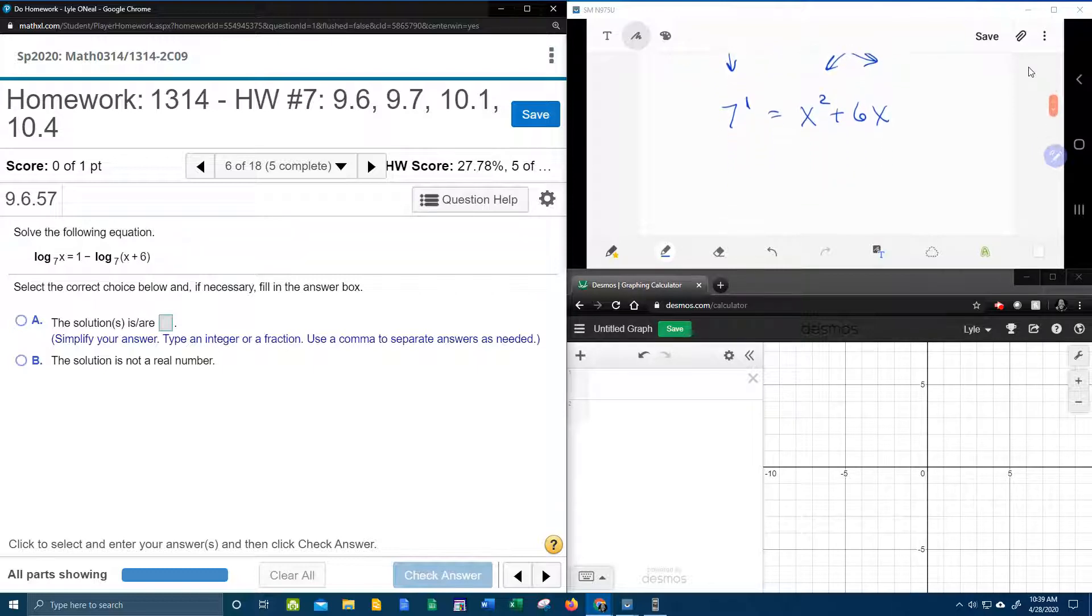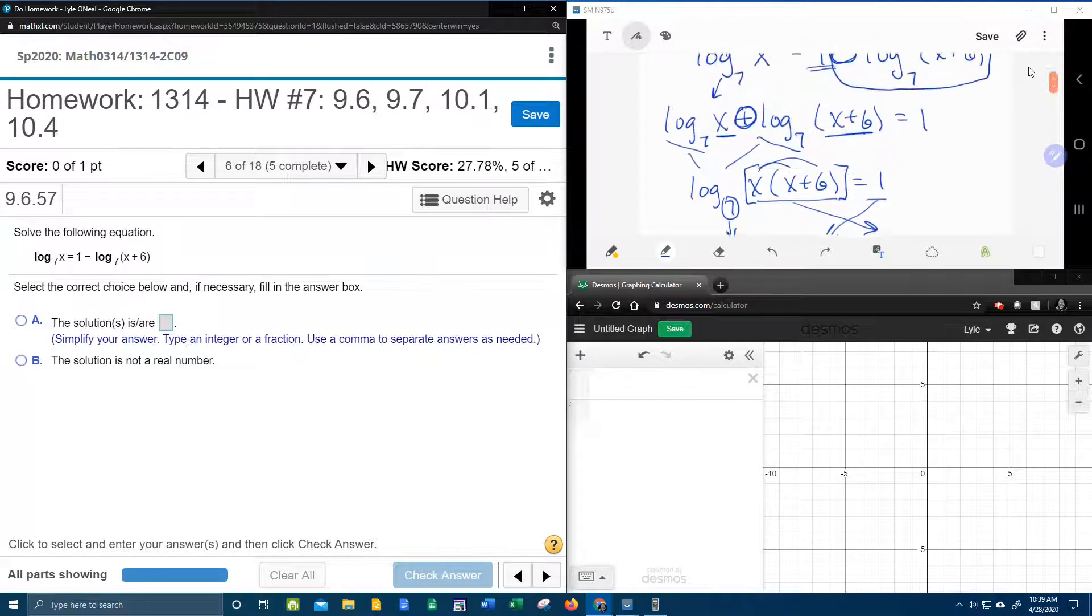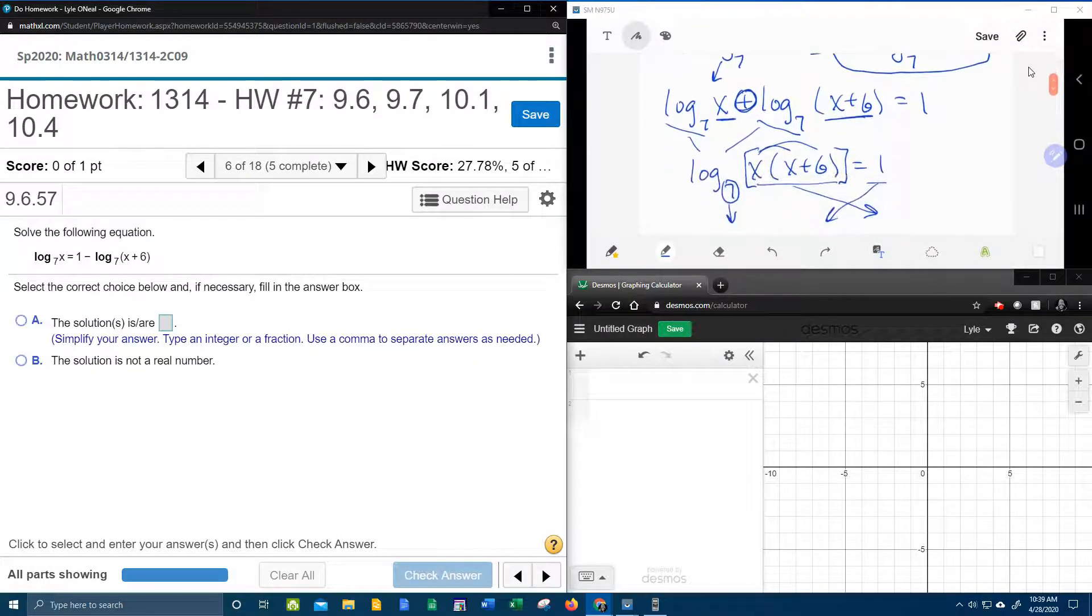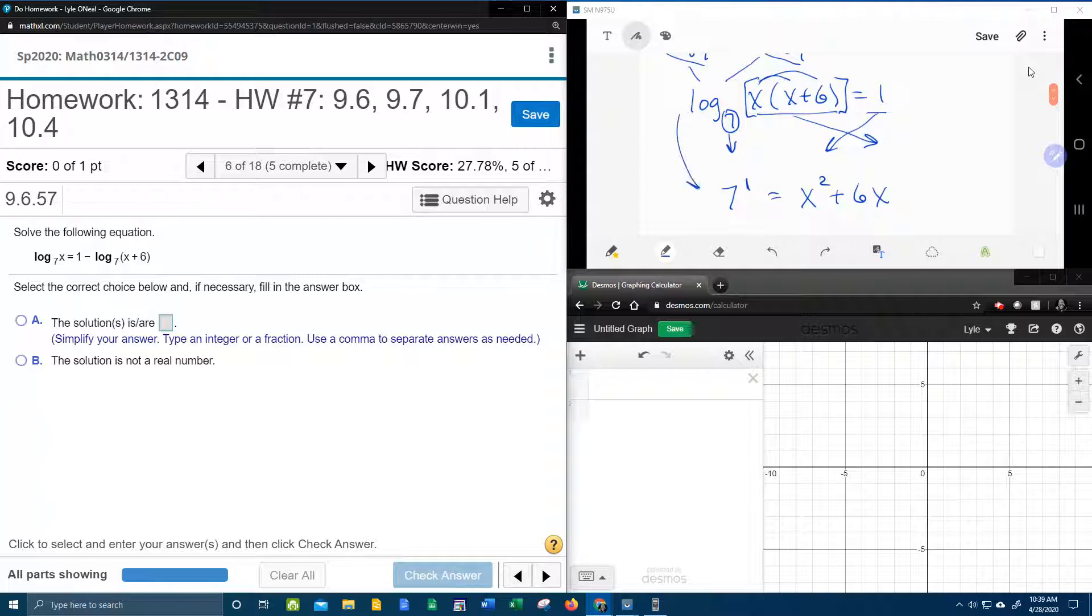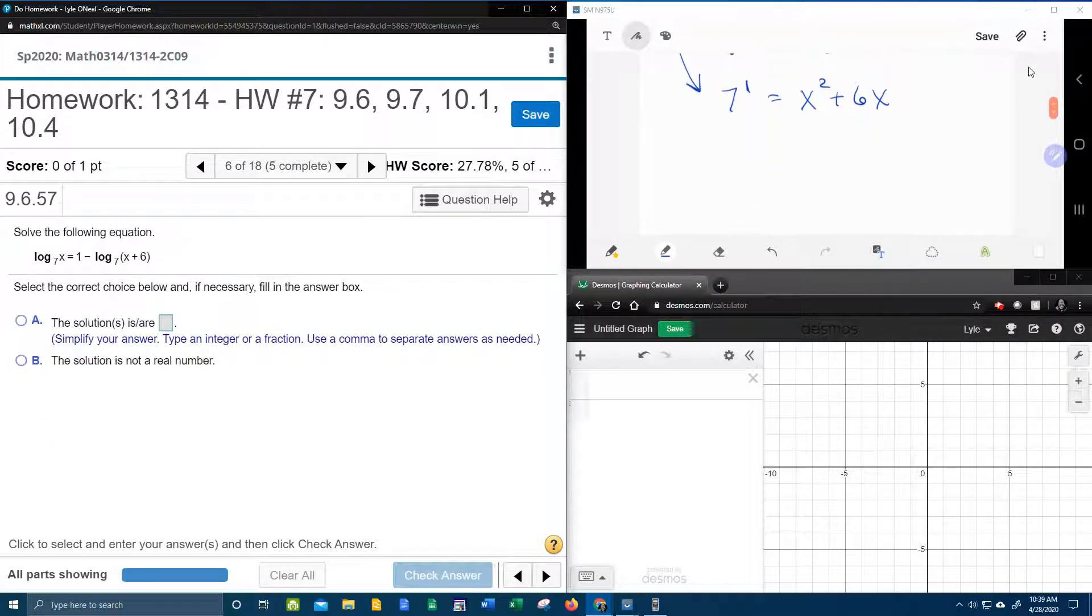And now notice the x squared that showed up makes this equation quadratic, which means I need to set it equal to zero. Man, this problem is awesome. We started with just a log equation using the properties of logs, the product rule to condense, converting to an exponential, and now we get to deal with a quadratic. All kinds of stuff going on. 7 to the 1 is 7. Bringing it over makes minus 7. And now that gets my quadratic equal to zero. And y'all know the fastest way to solve a quadratic is factoring. If it will factor, let's give it a shot here.